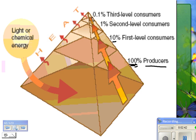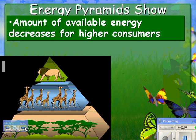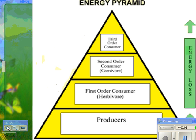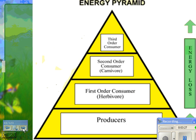The tertiary level consumers have 0.1% of the energy — this might be a hawk eating a mole that ate a grasshopper that ate producers. Energy pyramids show the amount of available energy, and it decreases for higher consumers. The important thing is that it takes a large number of producers to support a small number of primary consumers. If you look at the number of lions on a prairie, there are far fewer lions and carnivores than there are herbivores, and far fewer herbivores than producers.